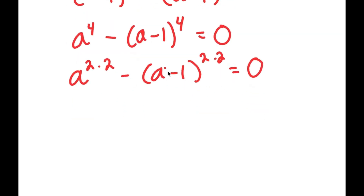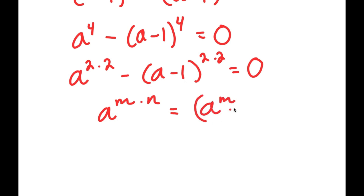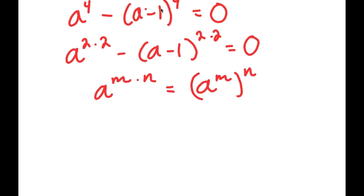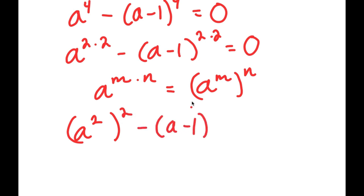The reason I did this is because if I have something in the form a to the power of m times n, this is equal to a to the power of m to the power of n. So a to the power of 2 times 2, I can rewrite as a to the power of 2 to the power of 2. And a minus 1 to the power of 2 times 2, I can rewrite as a minus 1 to the power of 2 to the power of 2, and this is equal to 0.